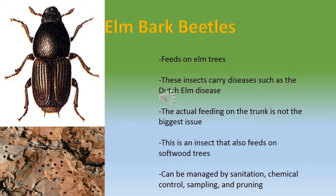The elm bark beetle feeds on elm trees, which are a type of hardwood deciduous tree. These insects carry diseases such as Dutch elm disease. It's not so much that eating the trunk causes the main problem — it's that they make the tree vulnerable enough to be exposed to diseases. This insect also feeds on softwood trees including evergreens, and can be managed by sanitation, chemical control, sampling, or pruning.